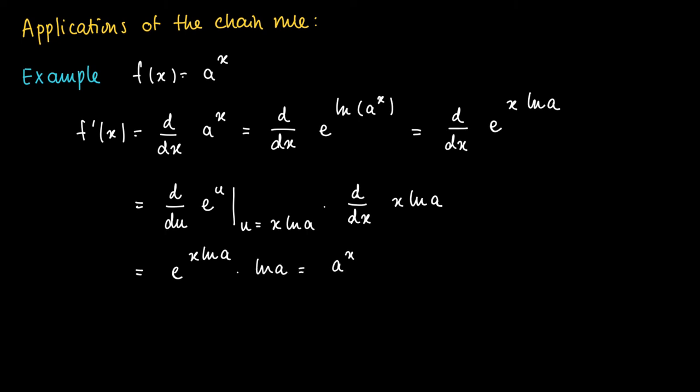Now we move back from e to the power x ln a to a to the power x, and we see that the derivative of a^x equals a^x times ln a.